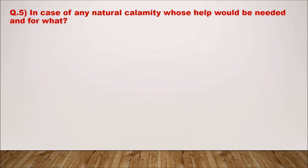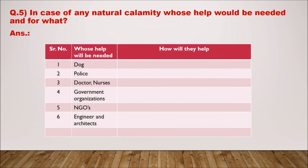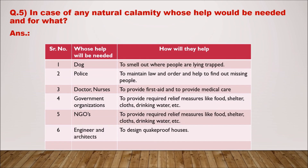Question five: in case of any natural calamity, whose help would be needed and for what? One — dogs: to smell out where people are trapped. Two — police: to maintain law and order and help find missing people. Three — doctors, nurses, and medical staff: to provide first aid and medical care. Four — government organizations: to provide food, shelter, clothes, and drinking water. Five — engineers and architects: to design earthquake-proof houses.